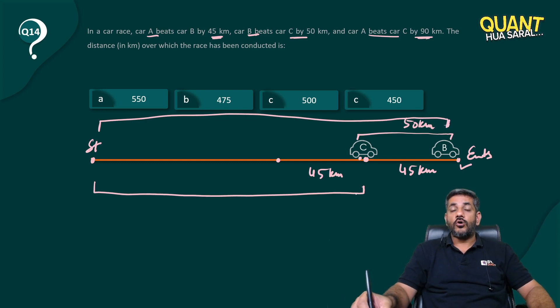So can I say that at this stage, B had to cover this hole to create this gap of 50? Or in other words, the gap between B and C was 45 kilometers when B was here. To create a gap of another 5, B had to run 45.